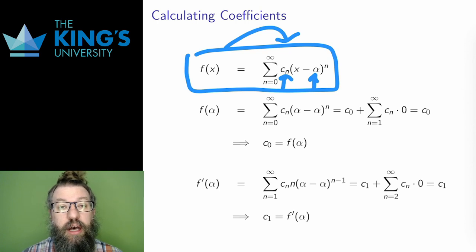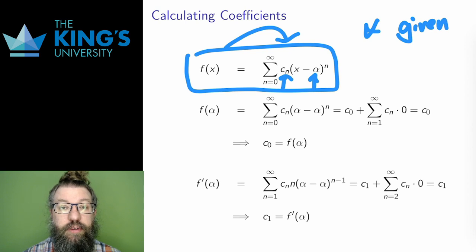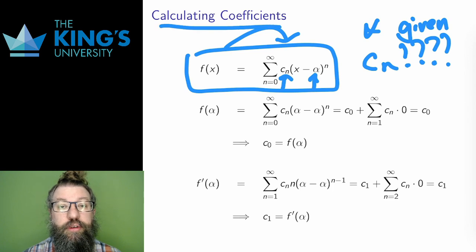Typically, the center point will be given. I'll try to calculate a Taylor series assuming some center point alpha. Then, all that remains is to calculate the coefficients. If I know the cn, well then I know everything about the series. So, how do I calculate coefficients? Let me show you.